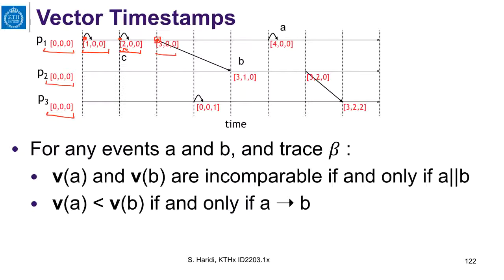The message arrives at P2. But first, let us look at another event at P3, which simply increments its own field in the vector. Now we come to the delivery event at P2. The algorithm first increments P2's own field, giving (0, 1, 0). Then it compares this with the vector sent on the message, which is (3, 0, 0). Taking the element-wise max: max(3, 0) = 3, max(0, 1) = 1, max(0, 0) = 0. So the resulting vector is (3, 1, 0).